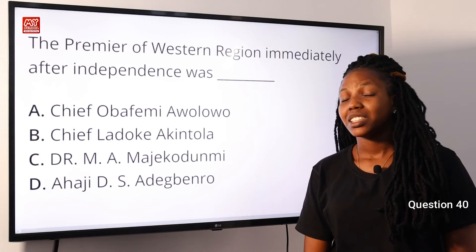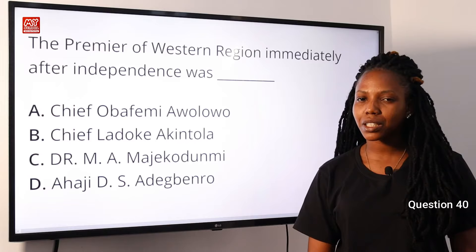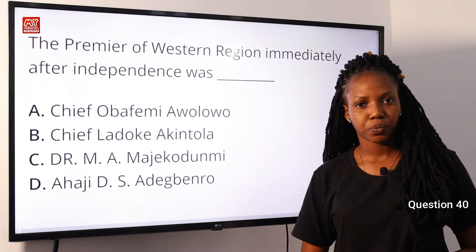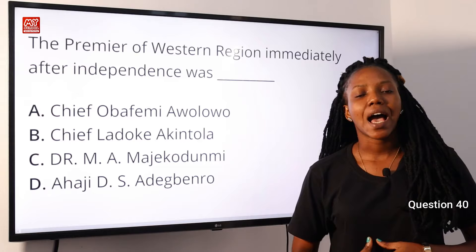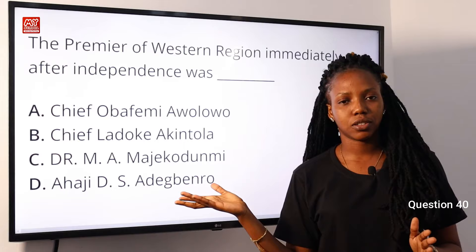Nigeria gained independence on the 1st of October 1960. That same year, Chief Ladoke Akintola became the premier of the Western region. However, there was a clash between Obafemi Awolowo and S.L. Akintola, so M.A. Majekodumi was appointed as the sole administrator. In 1963, S.L. Akintola resumed as premier of the Western region. The answer is therefore B, Chief Ladoke Akintola, also known as Chief Samuel Ladoke Akintola. Option B is the correct answer.